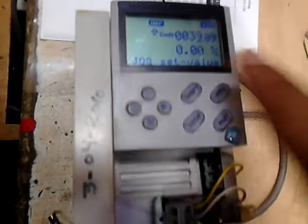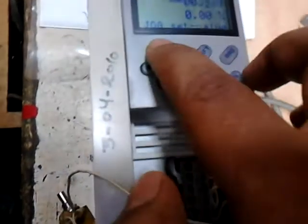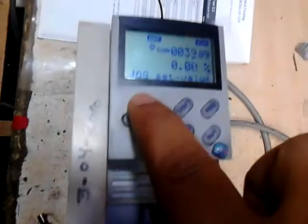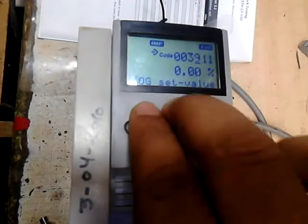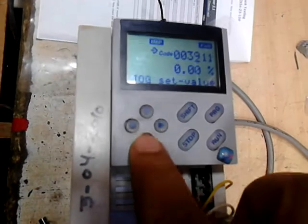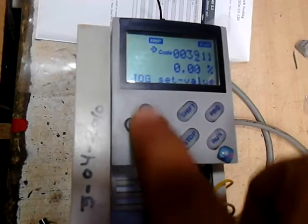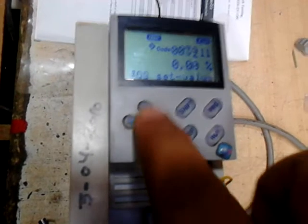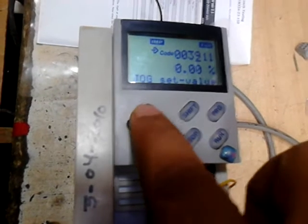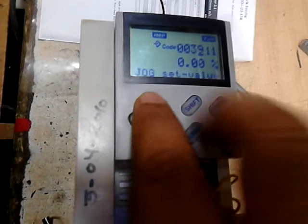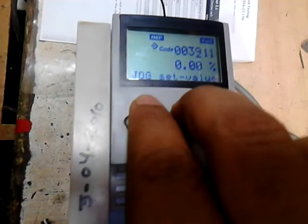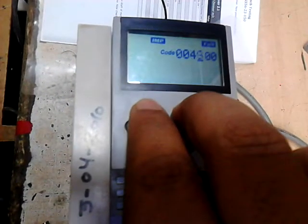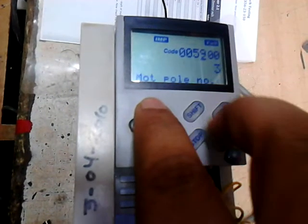Now we will move to the next parameter which is in series. If you want to move faster up and down, you have to hold this button and press the shift button, so you will move faster.